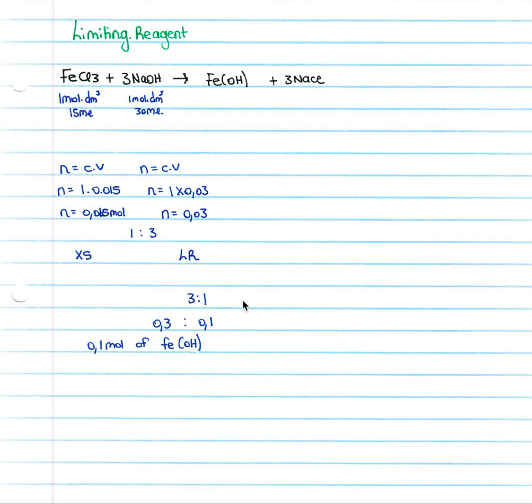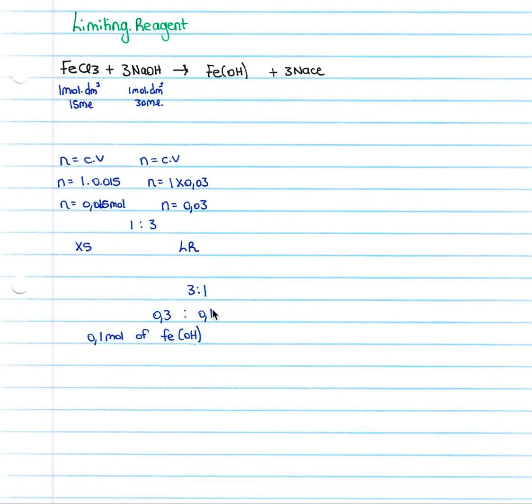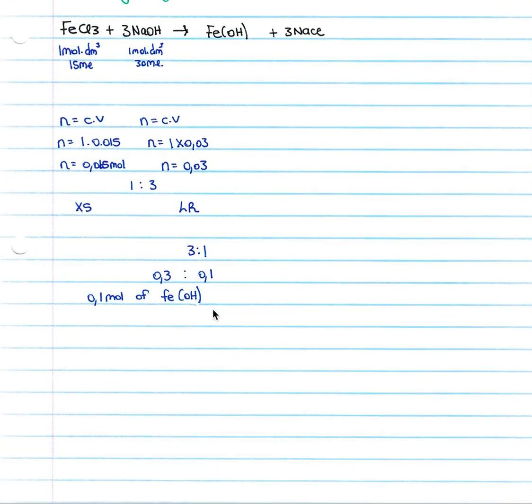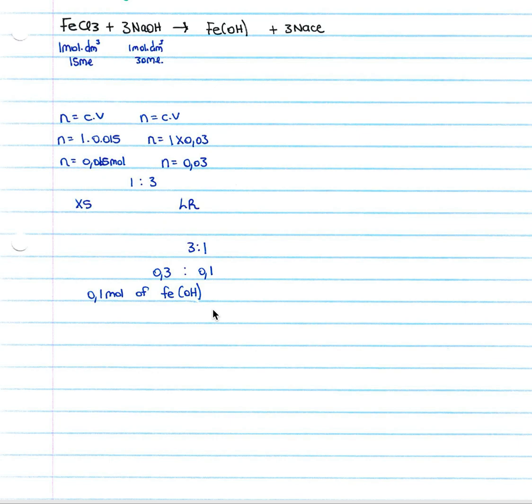We've got 0.03 and we've got three to one, so we're gonna divide by our three and we get 0.01 moles of Fe(OH)3. So that is our limiting reagent section and it's very often tested. And sometimes they may not even ask you to find the limiting reagent, you must always check which is the limiting reagent unless it's obviously stated.